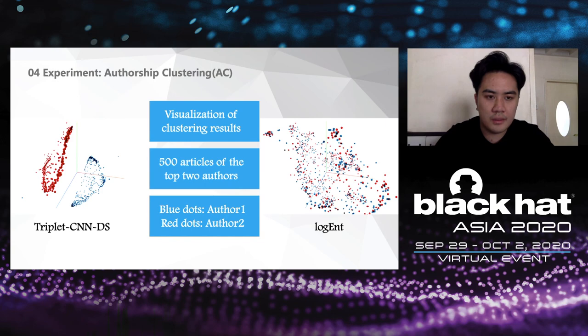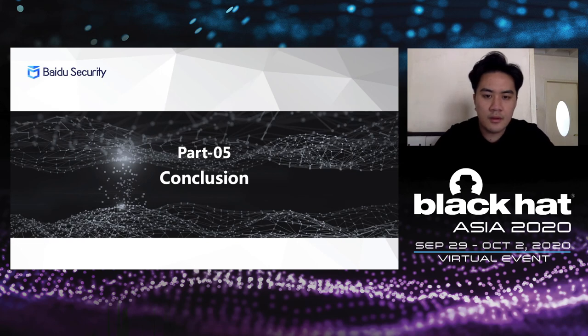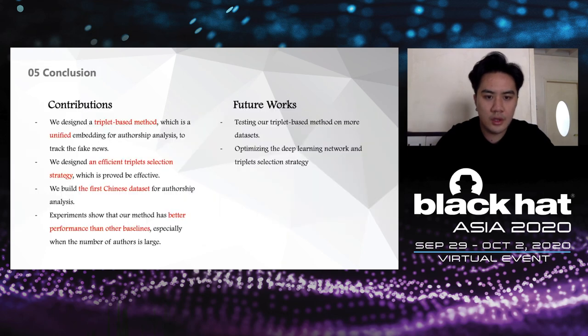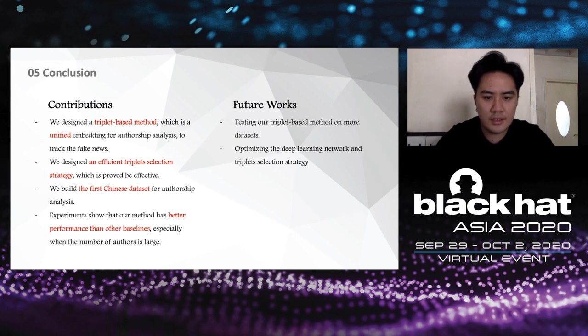That's the end of our experiment. Let's wrap up with a short summary. First, we designed and implemented the first unified embedding method for authorship analysis. We also designed an effective triplet selection technique. In the experiment, we collected the first Chinese dataset for authorship analysis, and our method outperformed other baselines, especially when the dataset gets large. In the future, we will continue to test our model and optimize the deep learning network and triplet selection strategy. That's all I have to say — thank you for your patience. Hope you all have a great day!